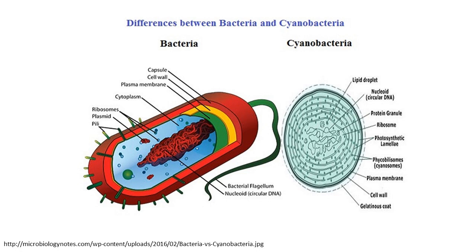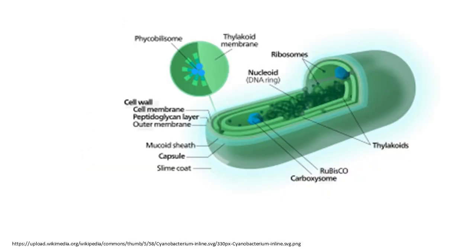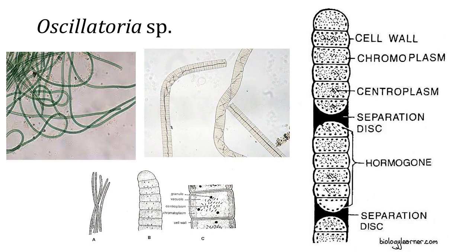Each individual cell — that is, a single-cell cyanobacterium — typically has a thick gelatinous cell wall. They lack flagella, but hormogonia of some species can move about by gliding along surfaces. Many of the multicellular filamentous forms of oscillatoria are capable of a waving motion.